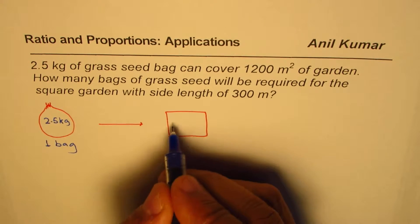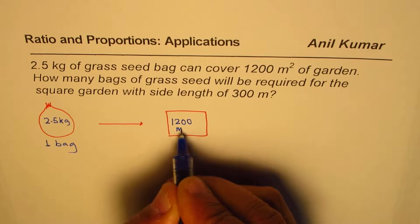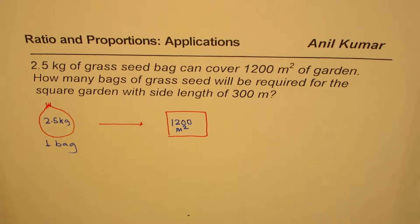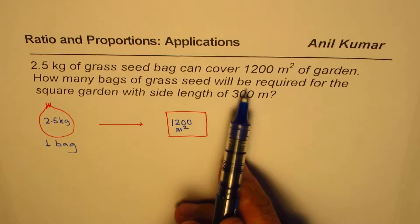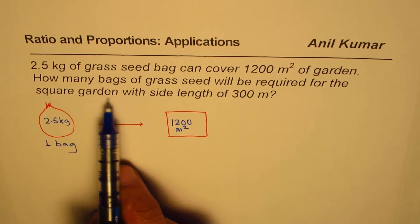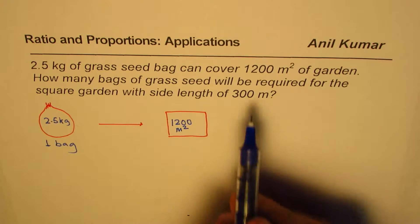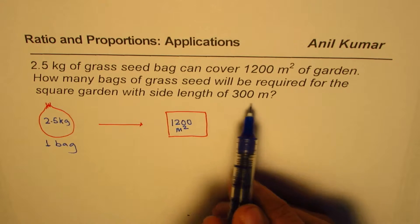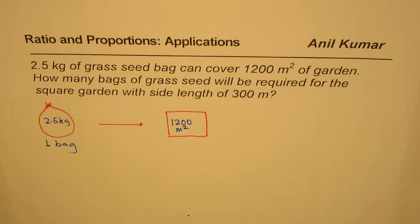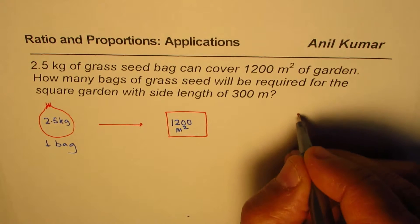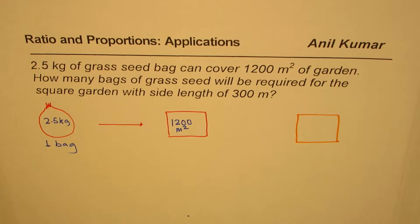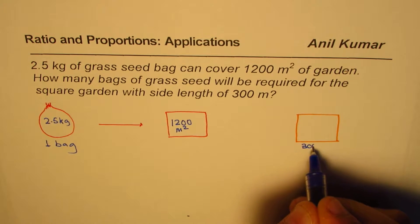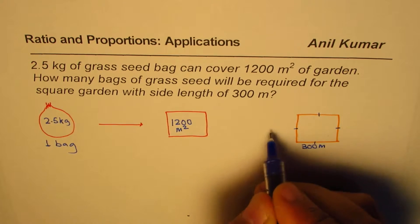Now the question is how many bags of grass seed will be required for a square garden with side length of 300 meters. So first we have to find area of that square garden. Let me sketch another square here and find the area. We have this as 300 meters—square means all sides are equal, so the other side is also 300 meters.